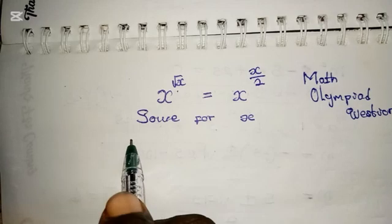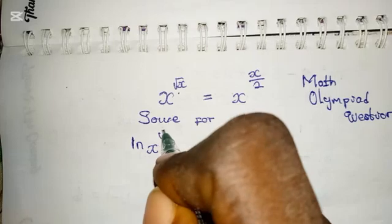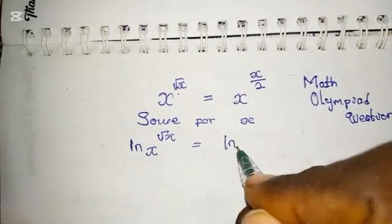Firstly, take the natural log of both sides. So you have the natural log of x to the power of √x is equal to the natural log of x to the power of x/2.